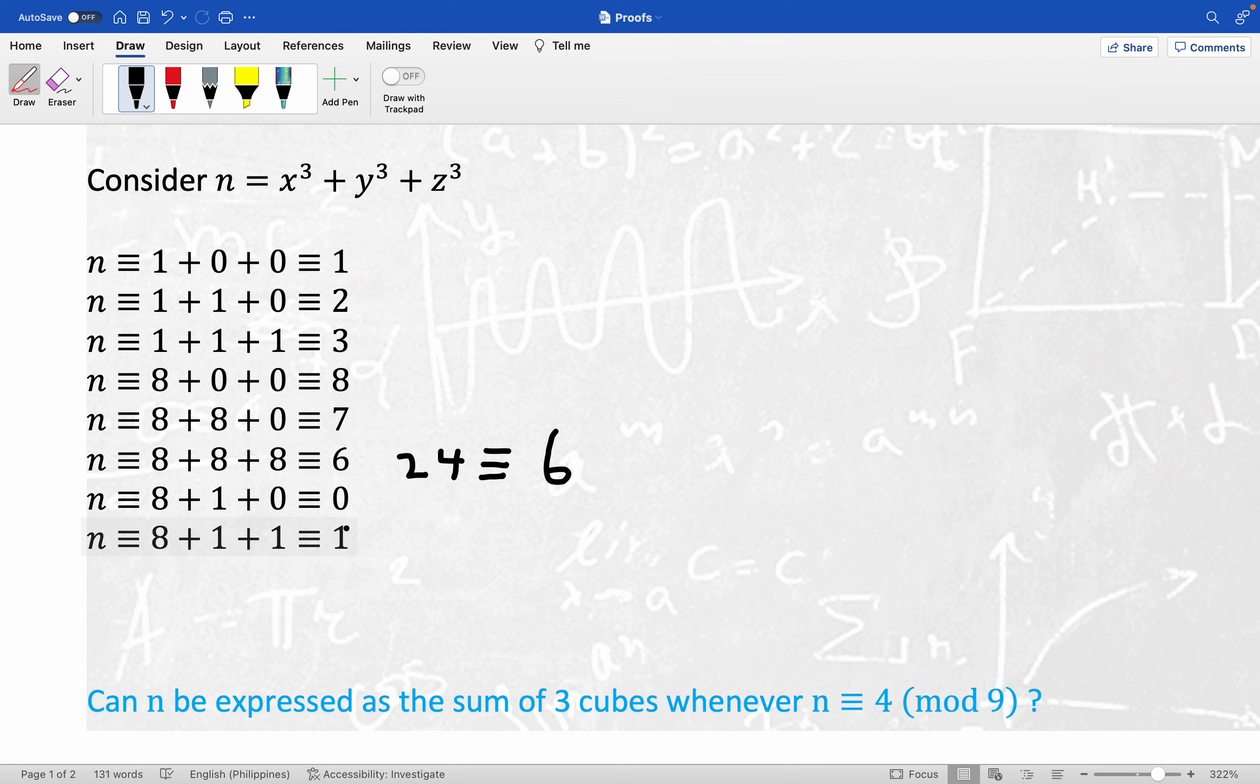And we have some repeats here. But in any event, what we have shown is that n is not congruent to four mod nine.